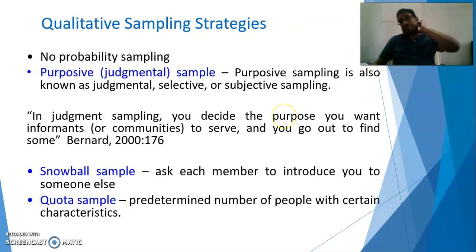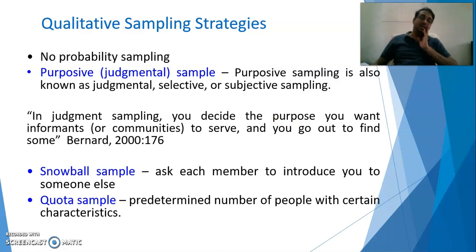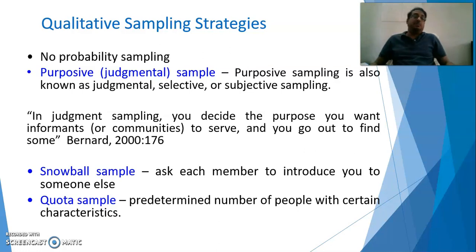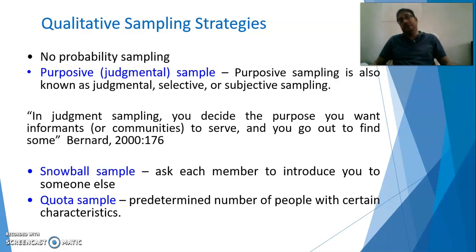For qualitative sampling, we use non-probability sampling techniques. We can use purposive sampling, which is also called judgmental sampling — purposive sampling is also known as judgmental, selective, or subjective sampling. In judgmental sampling you decide the purpose you want informants or communities to serve and go out to find some, according to Bernard (2000).